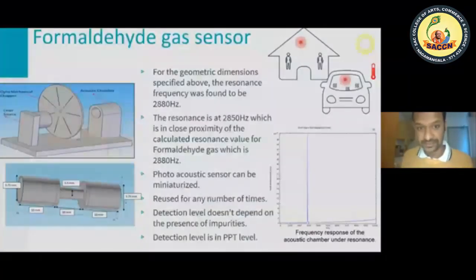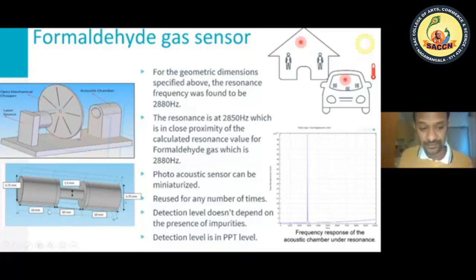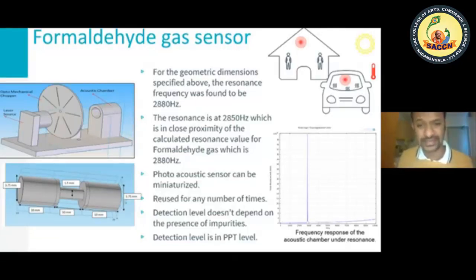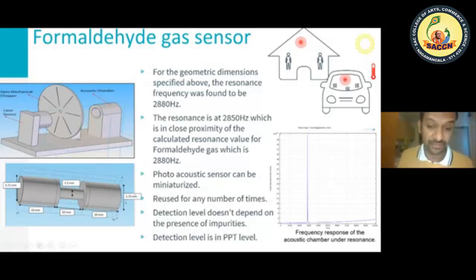The total time period required for modulating the laser for formaldehyde is around 42 nanoseconds with a duty cycle of 1.4%. That means it has to be on for only 0.0588 nanoseconds and off for 41.412 nanoseconds — which is very small. The signals generated were very weak and had to be enhanced using an acoustic chamber designed as a Helmholtz resonator. When we did the simulation, the 3D design had a laser source, optomechanical chopper, and acoustic chamber. The resonance frequency found in simulation was around 2880 Hz, which is in close proximity to the resonance value for formaldehyde gas — a good simulation result.